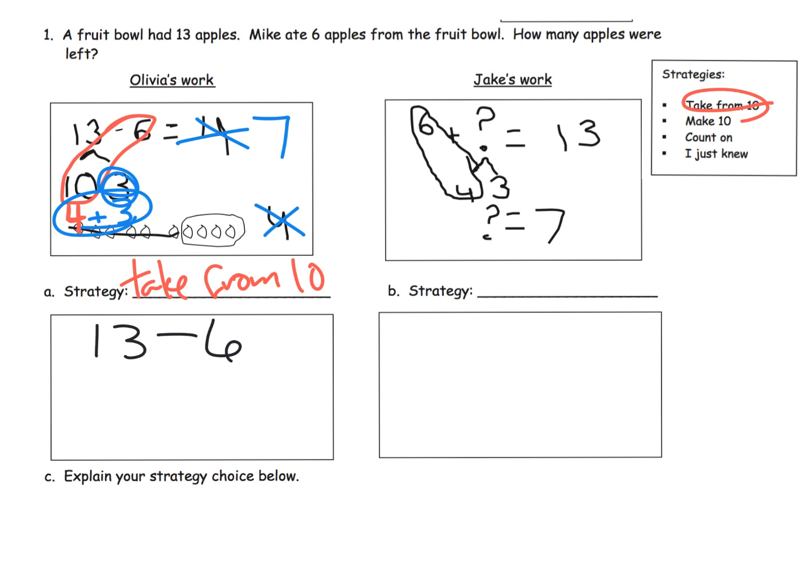So if we wanted to, we could make it look a little bit nicer. We could say, okay, here's our decomposition, 3 and 10. And then we can see that 10 minus 6 is 4. 4 plus the original 3 gives us 7. All right. So that's the take from 10 strategy.